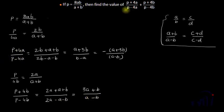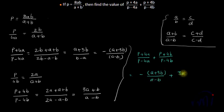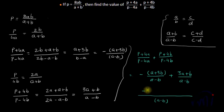Now we have the values for both terms. So (p+4a)/(p-4a) + (p+4b)/(p-4b) can be written as [-(a+3b)/(a-b)] + [(3a+b)/(a-b)]. Since both have the same denominator, taking LCM as (a-b), we just add the numerators: (-a-3b) + (3a+b) = 2a - 2b.